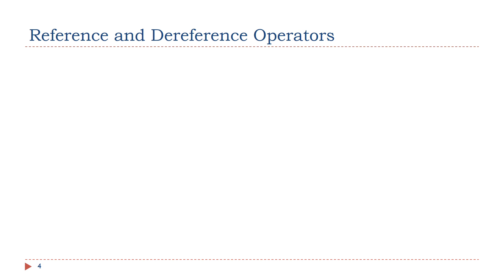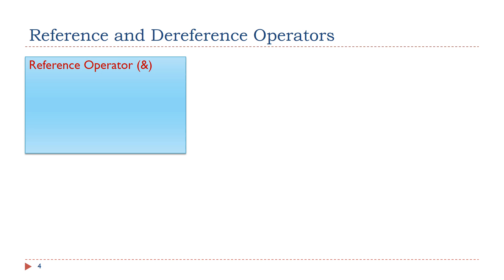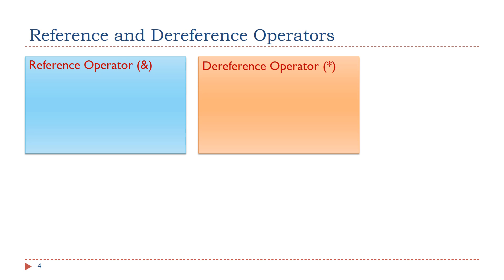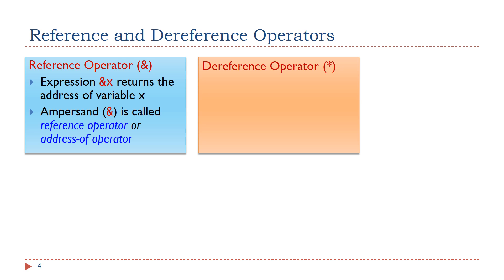For C pointers, there are two important operators: the reference operator and the dereference operator. Let's look at the reference operator first. The expression ampersand x returns the memory address of variable x. The ampersand is called the reference operator, or address-of operator.